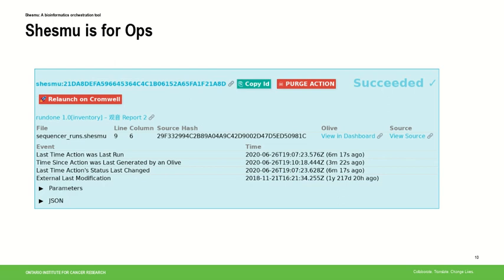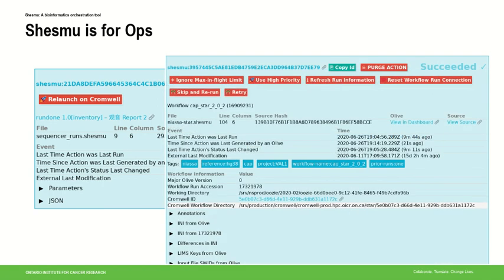The display for actions is unique to the different types of actions, so you can choose to display whatever information is relevant to your workflow engine. This is an example action from our reporting system with very little information, whereas actions associated with our workflow system can pull out all kinds of data — including where logs are — and other things our operations group wants to know. They can also have commands associated with them, so if things failed for transient reasons, all of our workflow actions can have buttons to retry automatically.